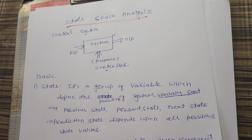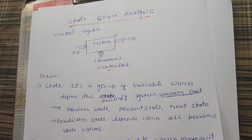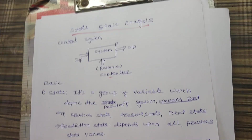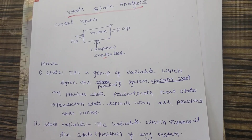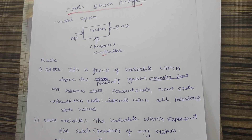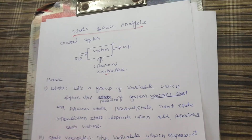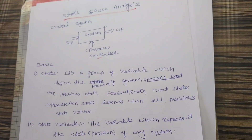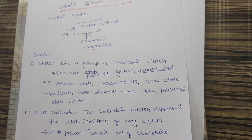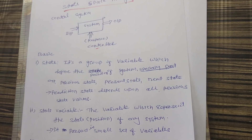Before going into the details, we will go through some basic concepts of state space analysis. The first concept is 'state.' The state is defined by the group of variables which define the position of the system. In a system there are different states: the previous state, the present state, and the next state. A group of variables is used to represent each state, and the state can give the history of the system. From the previous data of the system, we can predict the next state.